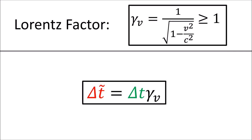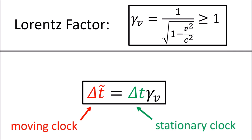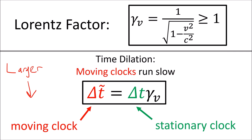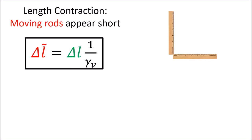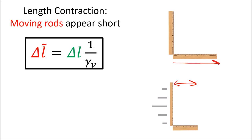When we measure the time between clock ticks for a moving clock and measure the time between clock ticks for a stationary clock, we find that the time between clock ticks for the moving clock is actually larger. This effect is called time dilation, and it basically means that a moving clock will tick more slowly than a stationary clock. There is a similar effect on space called length contraction where rods that are moving appear to have a shorter length than the same rods when they are standing still.